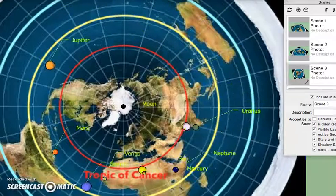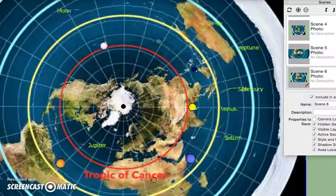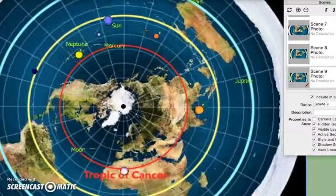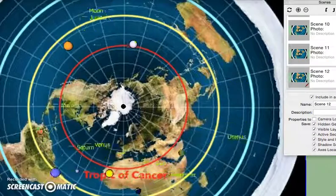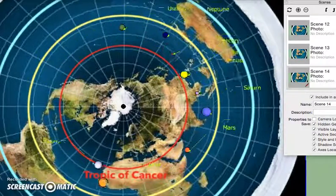Venus also displays a retrograde motion, but Mercury's retrograde motion takes 88 days, while Venus is a lot longer than that. So I'll make another video just explaining Venus's retrograde motion and the other planet's retrograde motion.